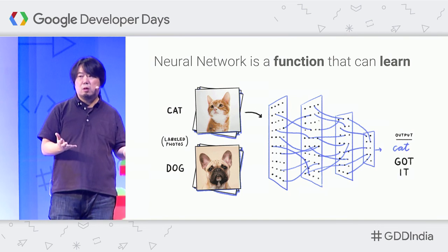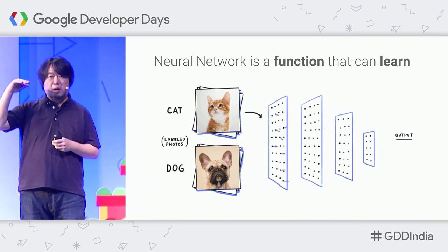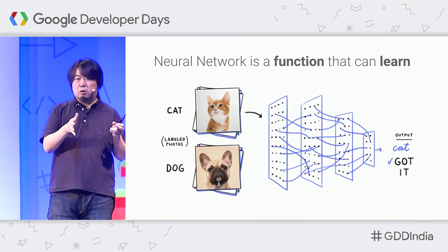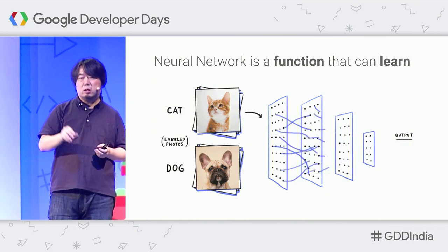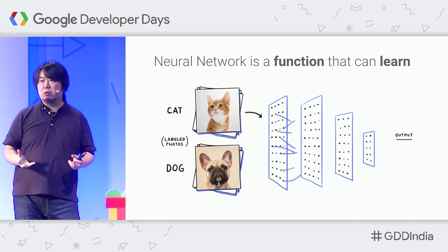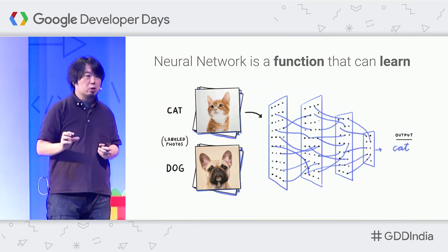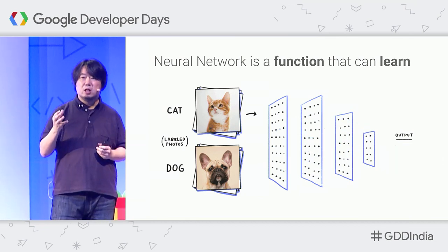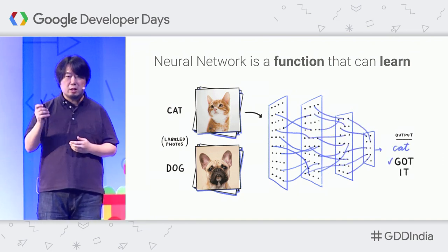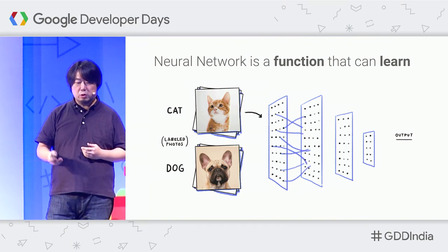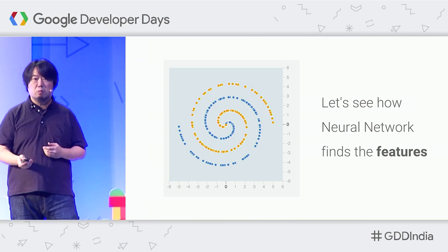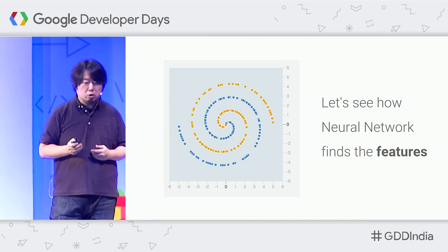You can replace cat and dog images with any other data you want. For example, if you have an Oracle or MySQL database with customer transaction data from an e-commerce website, you can convert those customer transactions into a vector or matrix and use neural networks to classify which customers would be premium customers and which would be spammers or cheaters. That could be one example of neural network use cases.